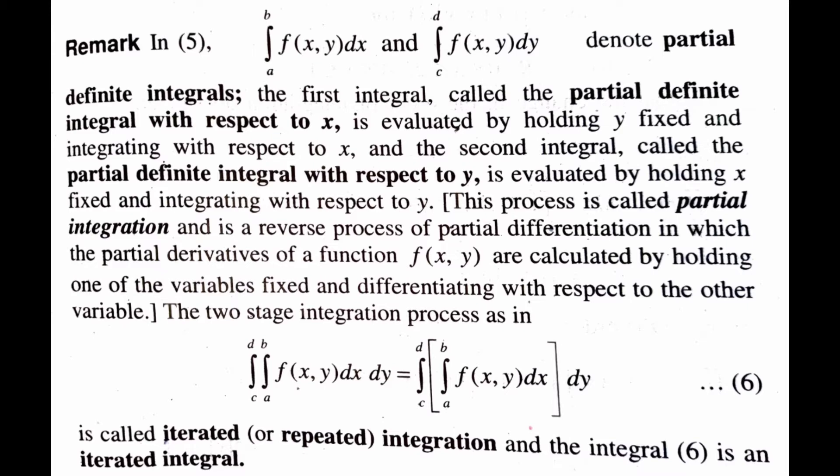The first integral, called the partial definite integral with respect to x, is evaluated by holding y fixed and integrating with respect to x. The second integral, called the partial definite integral with respect to y, is evaluated by holding x fixed and integrating with respect to y.